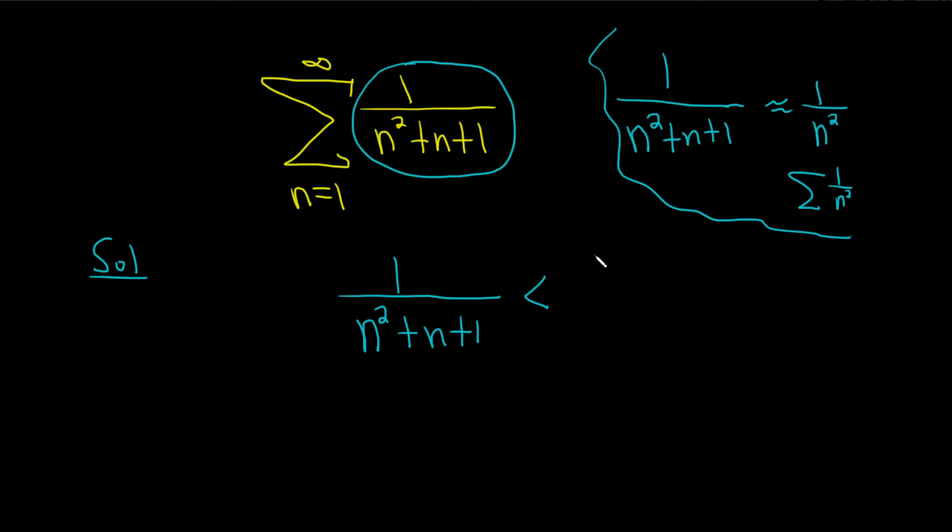So this is actually less than 1 over n squared. You can do that because this fraction on the left is smaller than this fraction on the right because the bottom piece here is bigger. We have an extra n plus 1 here.